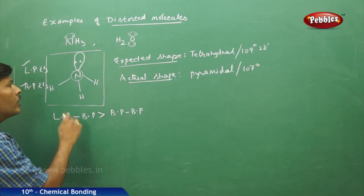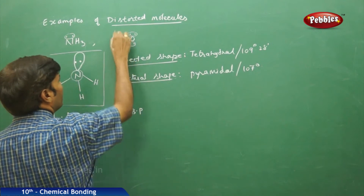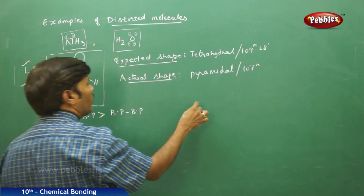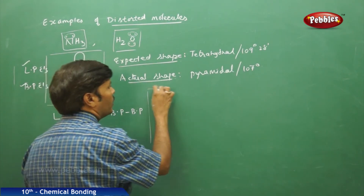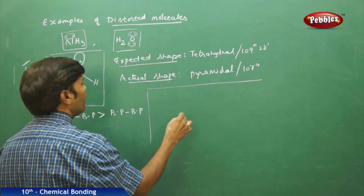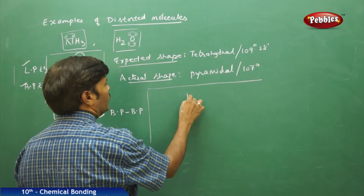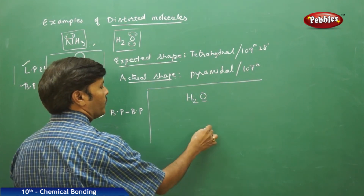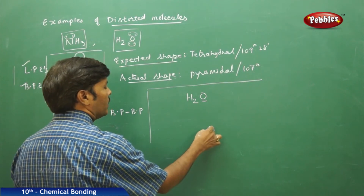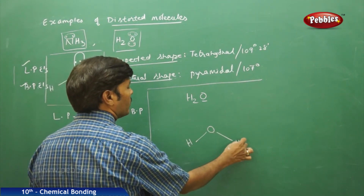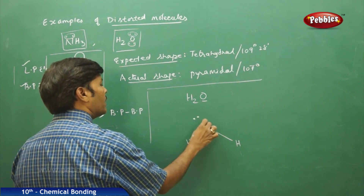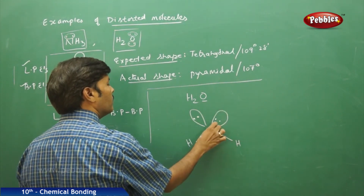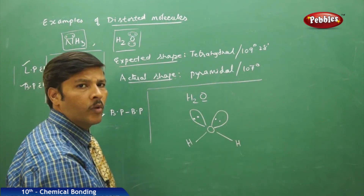The same discussion made for ammonia applies to the water molecule. In water (H₂O), oxygen is the central atom. Oxygen has two oxygen-hydrogen bonds and two lone pairs, so the central atom has two lone pairs and two bond pairs.